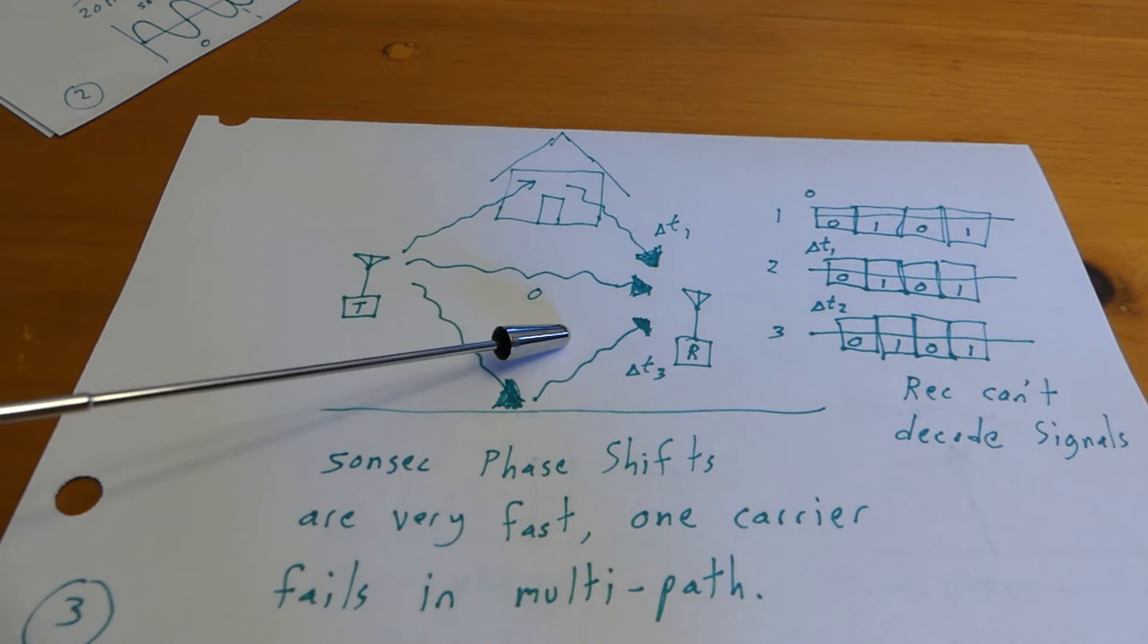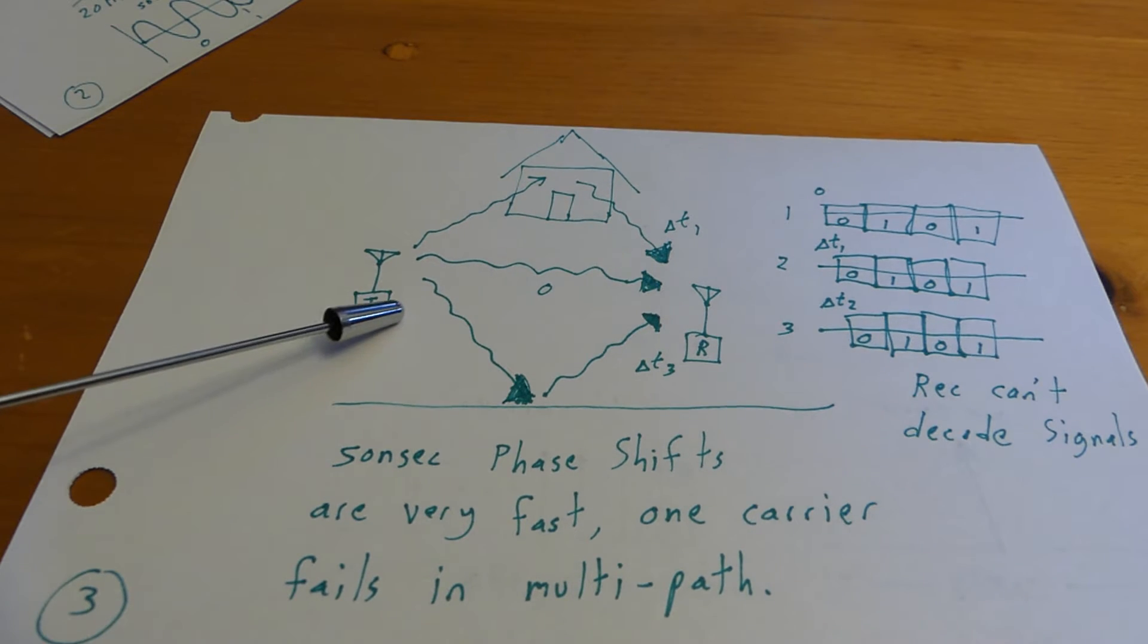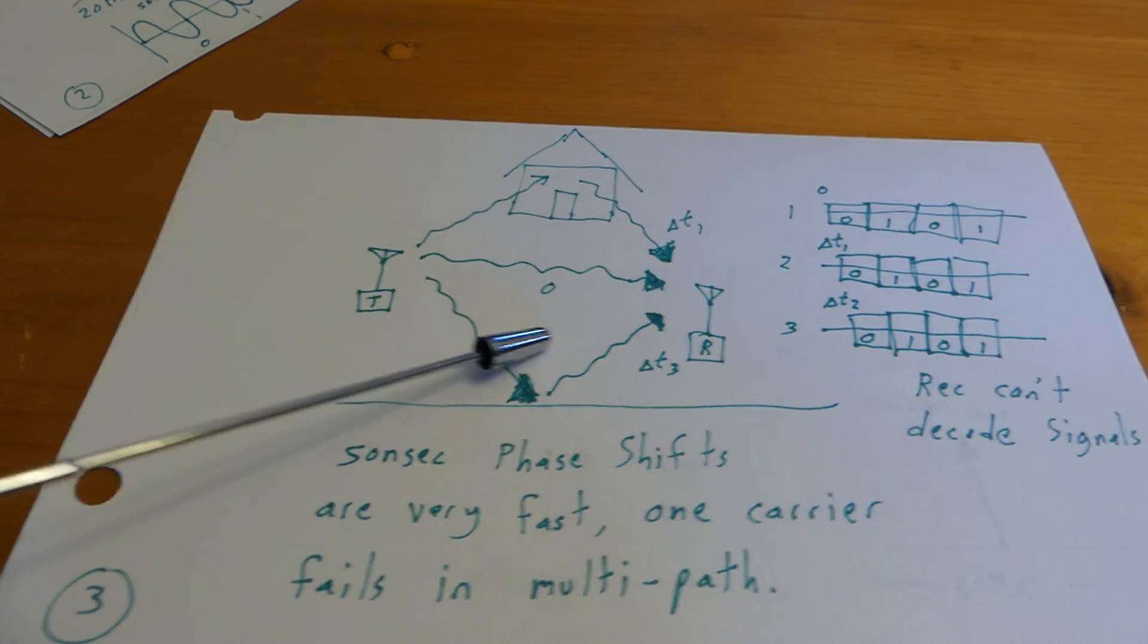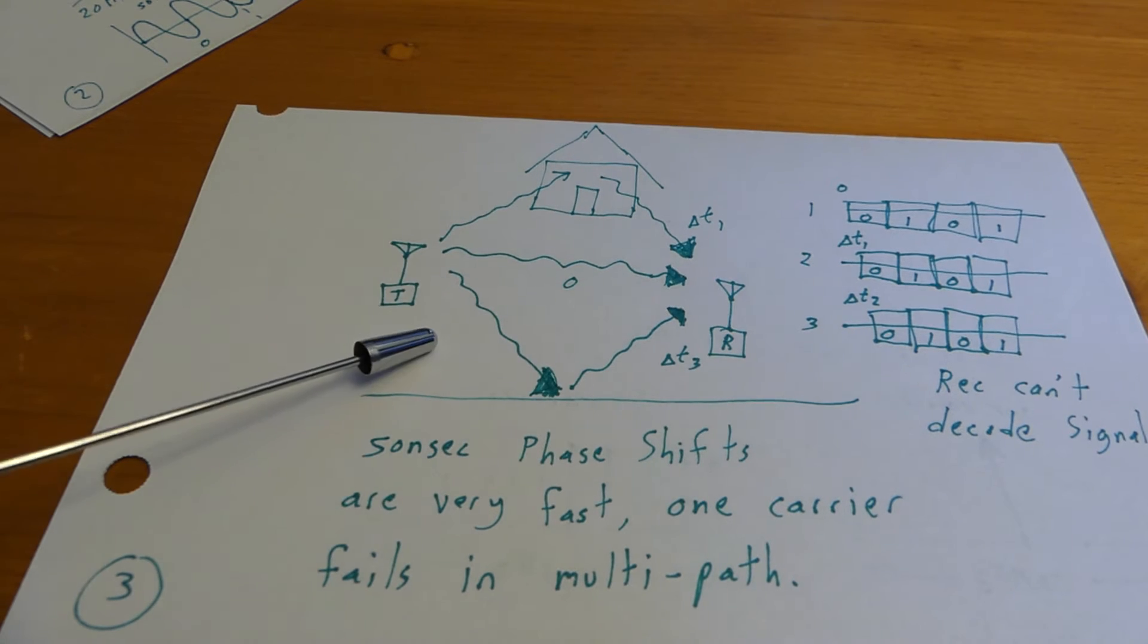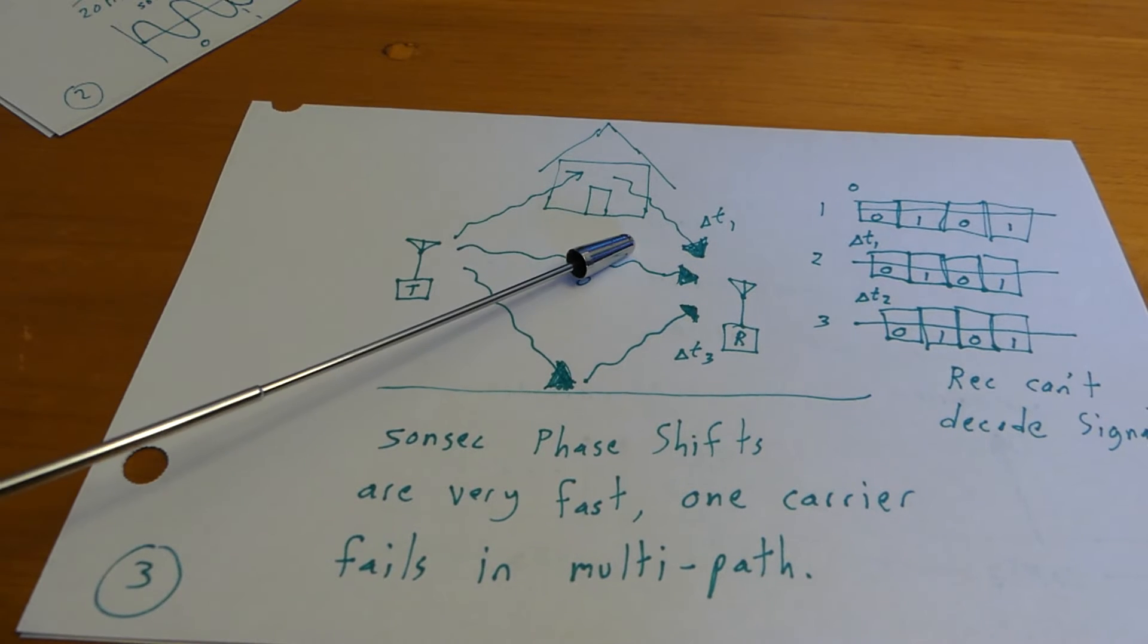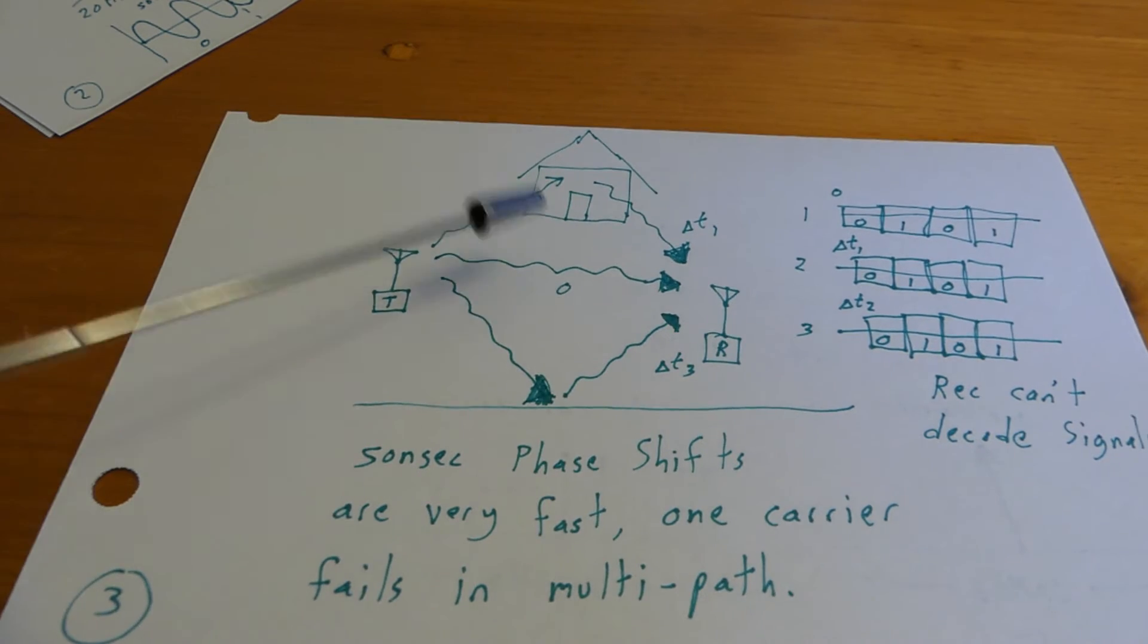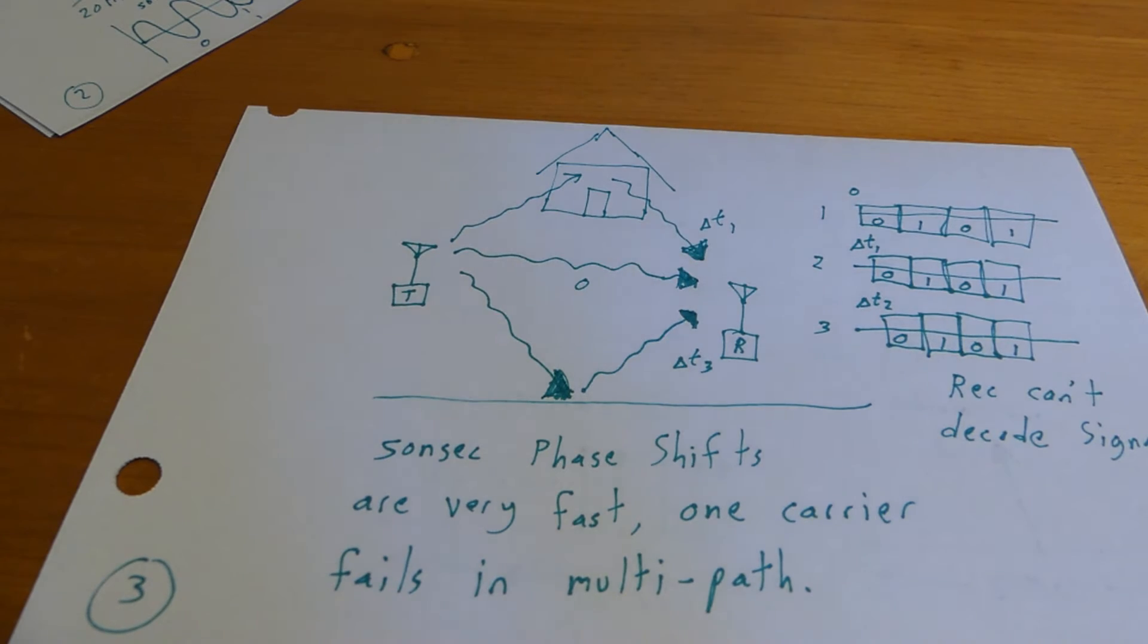So we can't really achieve this 50 nanosecond phase shifts because all the multipath effects will mess it up. Well, you can say one method is to slow it down. Well, that is true. But is there another way? Can we get effectively a 50 nanosecond phase shifts and somehow deal with this nasty multipath? And that is what OFDM does for us.